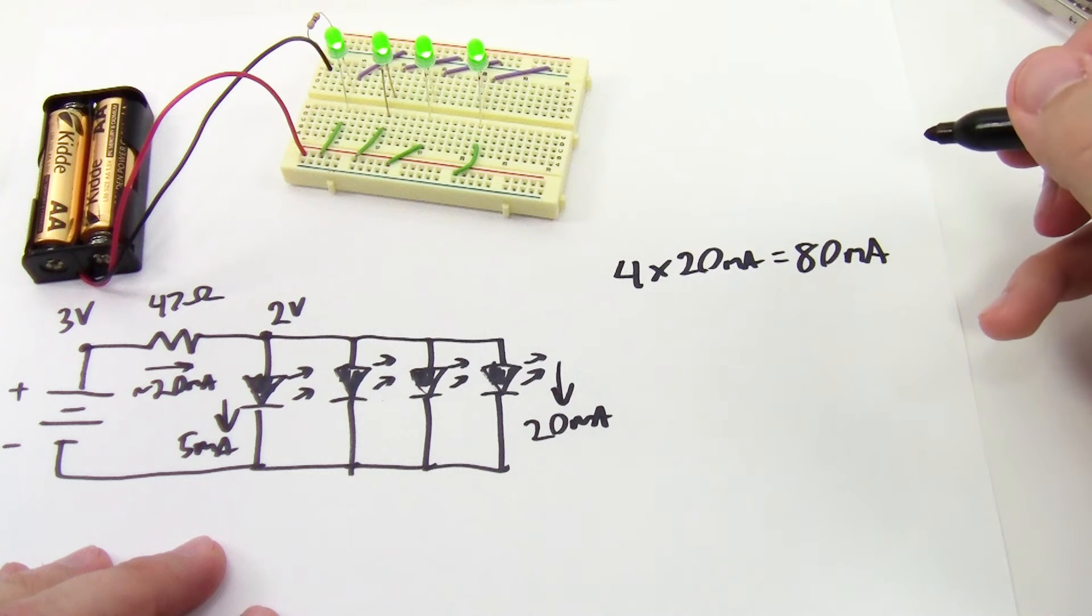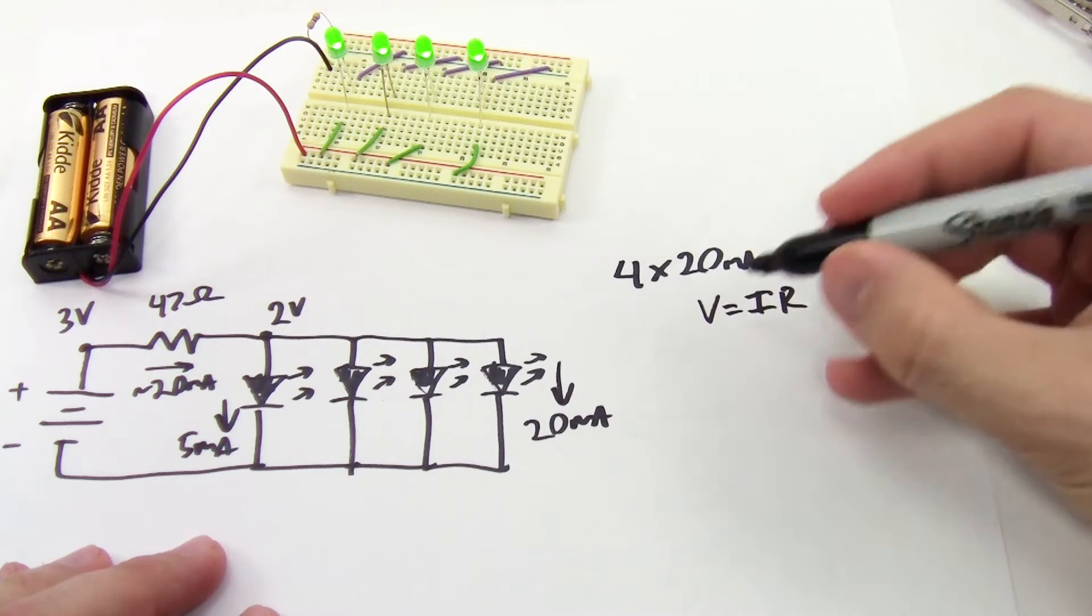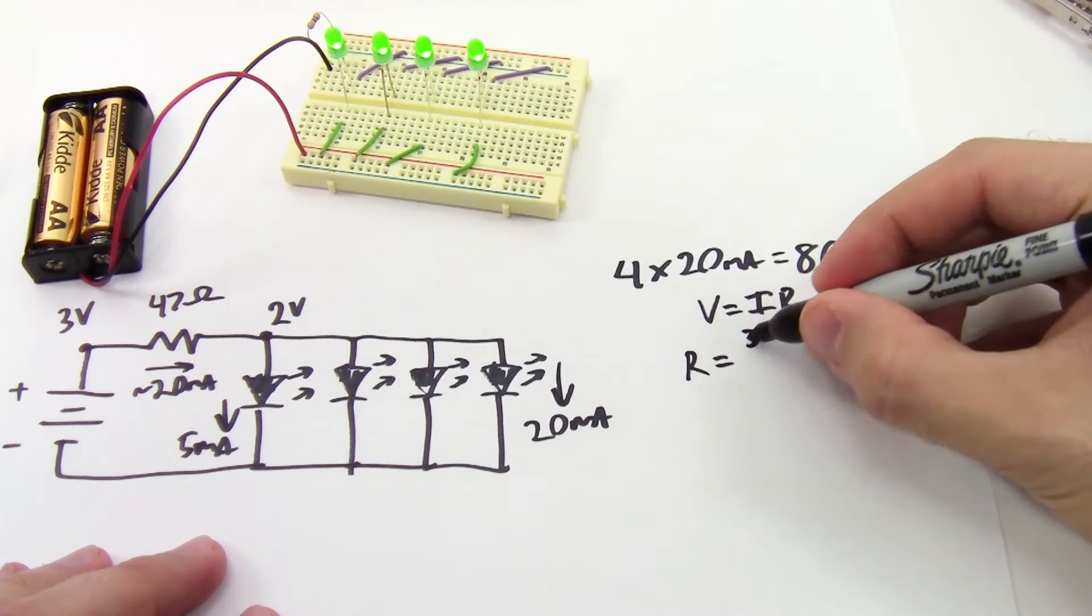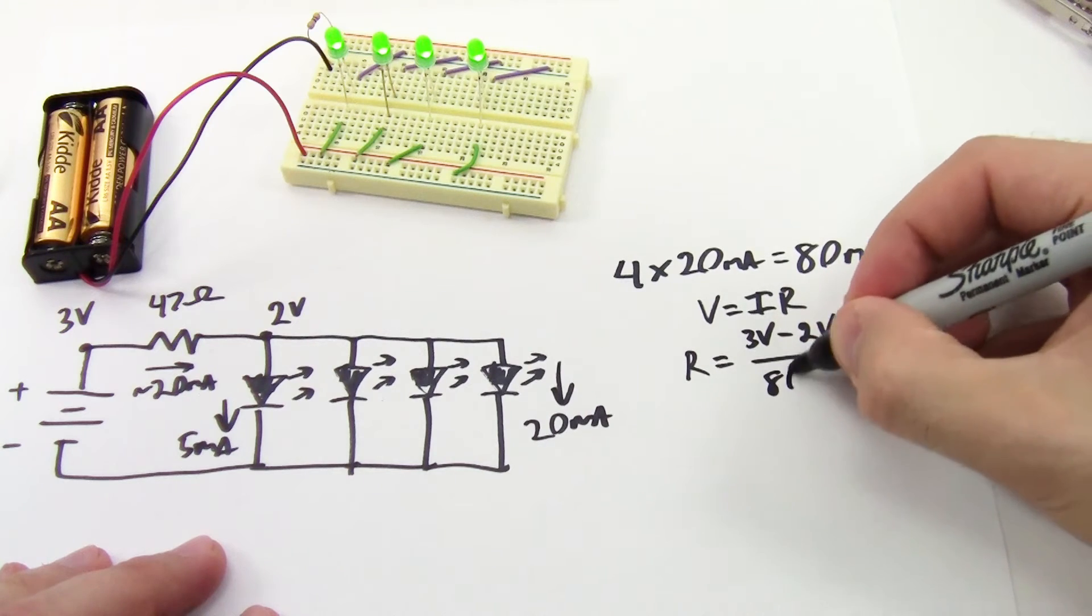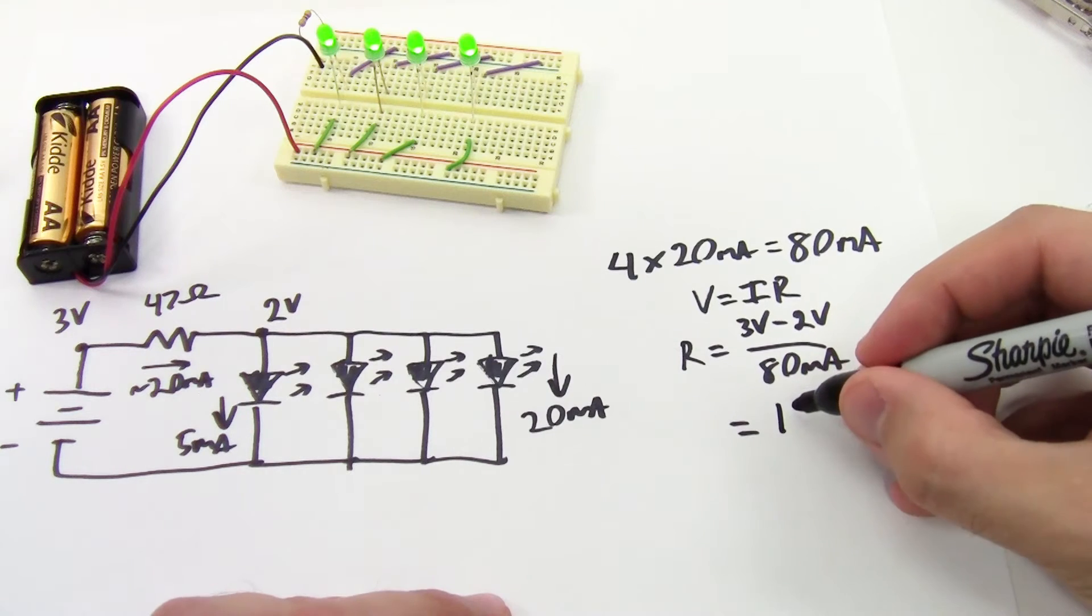That's fine, and I can just do the same calculation I had before, where I start with Ohm's law, V equals IR, rearranged to solve for the resistance. R is going to be 3 volts minus 2 volts over 80 milliamps, and in this case that gives me 12.5 ohms.